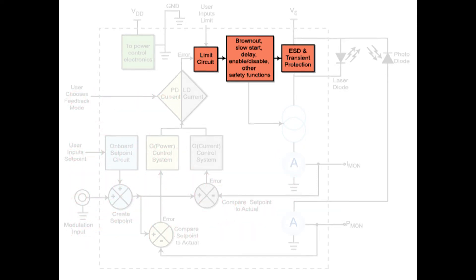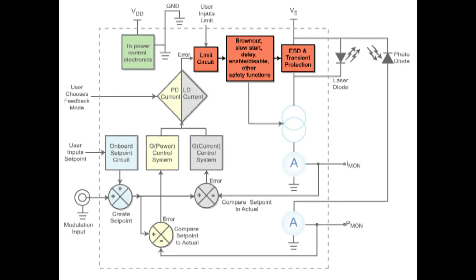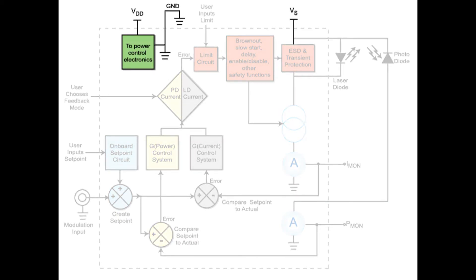Power must be provided to the control electronics and the current source. This can take the form of a DC power supply for an OEM module or an AC input connector and cable for an instrument.